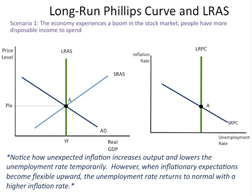Scenario one: the economy is experiencing a boom. The stock market is experiencing high gains, people have more money, and they're going to spend more. The spending curve on the long run aggregate supply and aggregate demand model is the aggregate demand curve. If people are spending more money, aggregate demand is going to shift to the right, causing price level and output level to increase temporarily.